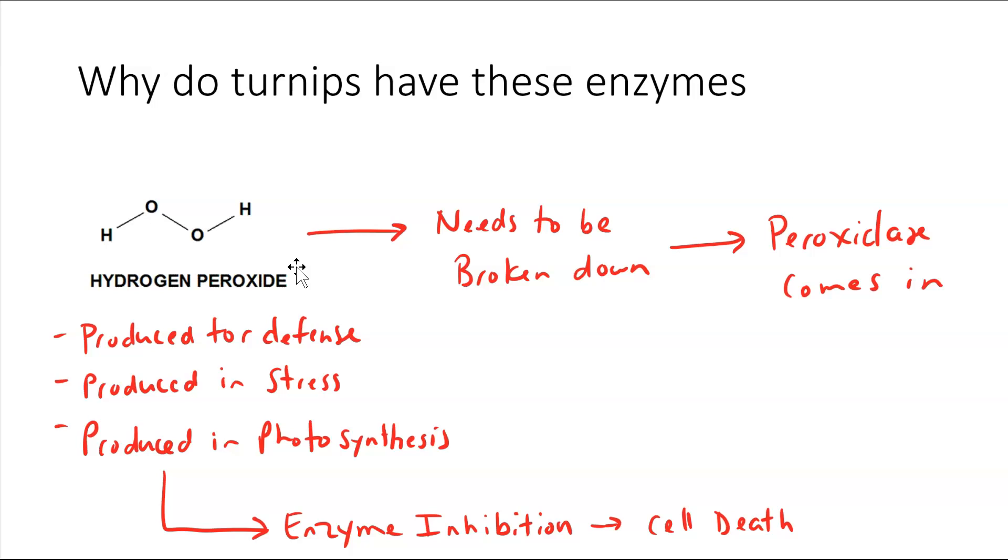What exactly are peroxidase enzymes doing in a turnip cell? Well, hydrogen peroxide is a product of chemical reactions inside the cell. They are produced for defense against pathogenic microorganisms. They're produced during photosynthesis and during times of stress in general. The problem with that is that hydrogen peroxide itself can cause enzyme inhibition of important metabolic pathways for the turnip.